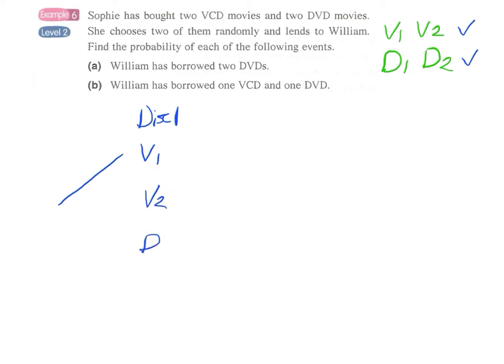And when we come to disc 2, if the first disc is V1 then what's left behind will be only V2, D1 and D2 only.